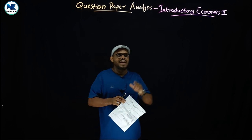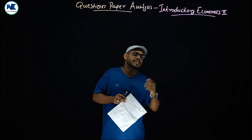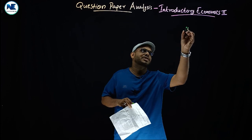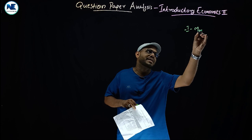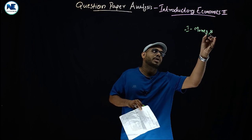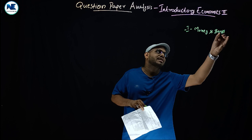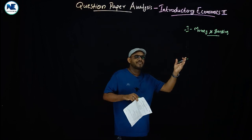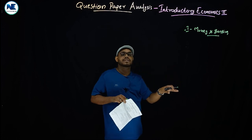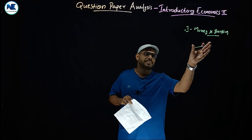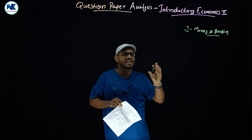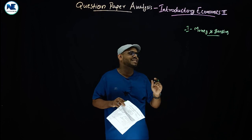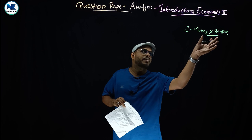Introductory economics 2nd has 4 modules covering diversified topics. Module 1 is related to money and banking, including commercial banks, central bank, RBI, functions of money, and monetary policy instruments.